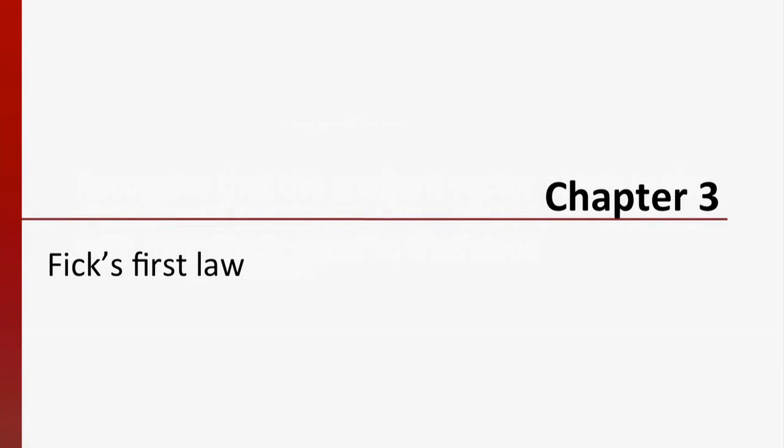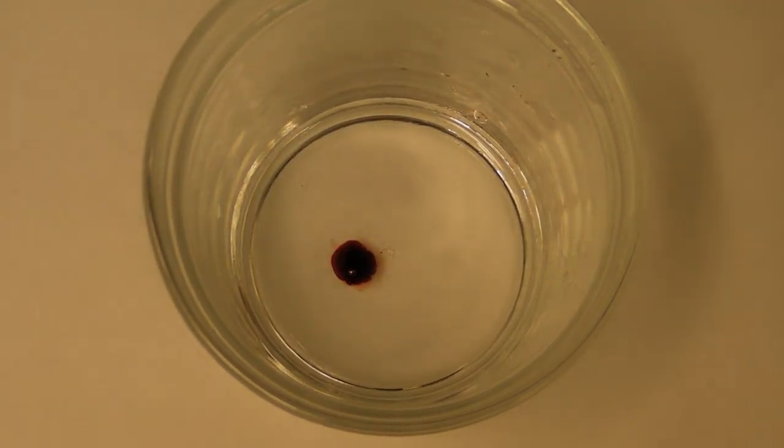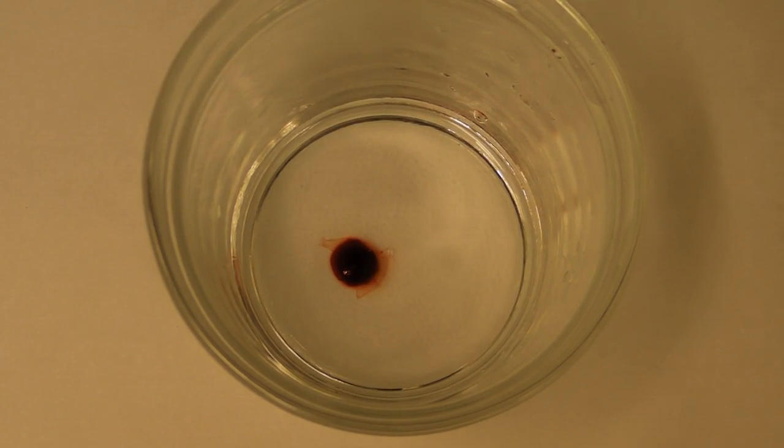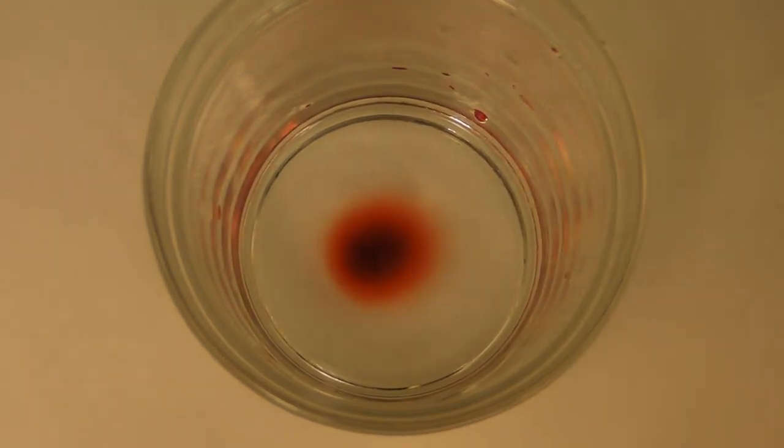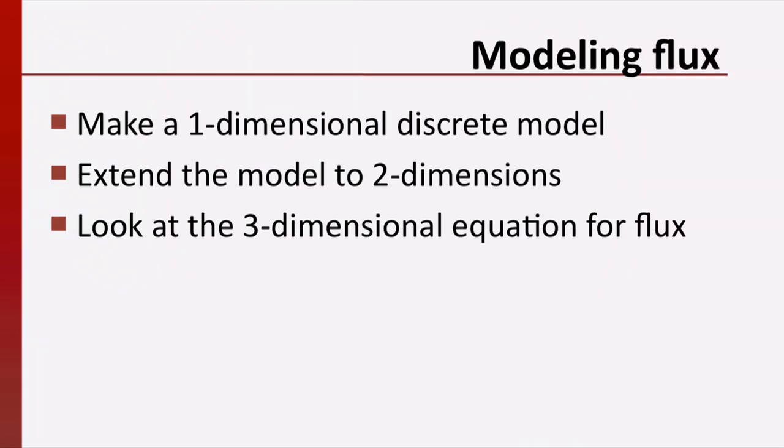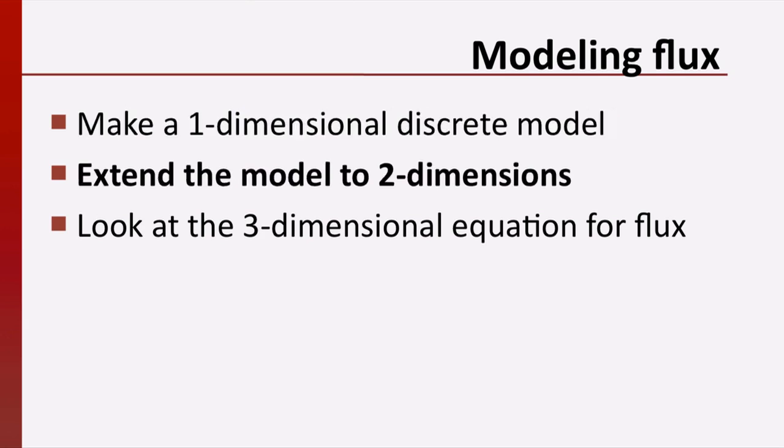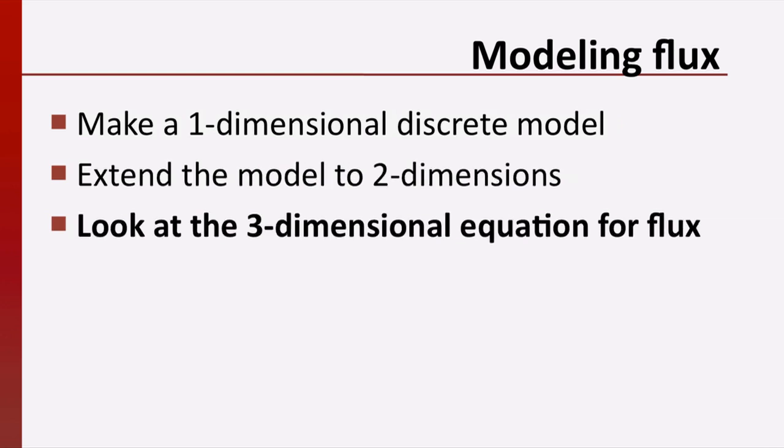In order to better understand this process, we begin with a demo. Here you see water and a drop of dye. Initially, the dye is concentrated in a single droplet at the center. Over time, the dye particles move away from the center until a point in time when the process reaches a steady state. In order to model what is happening at the atomic level in this demo, we are going to start by making a one dimensional discrete model. This one dimensional model will be simpler and it will allow us to describe the flux of particles more easily. Then we will extend the model to two dimensions, creating a discrete time step simulation to determine the equation for flux. Then we will look at the three dimensional equation for flux.